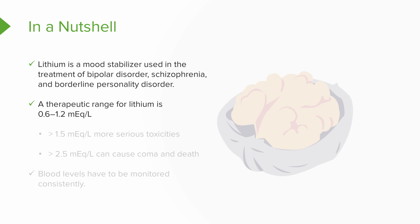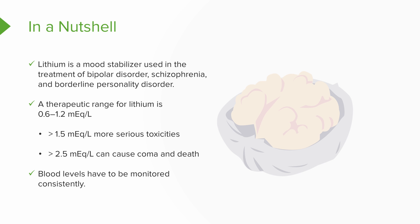An example of a therapeutic range for lithium is 0.6 to 1.2. Greater than 1.5 you're going to start to see some more serious toxicities, and greater than 2.5 can cause coma and death. The blood levels have to be monitored consistently. Early on in the treatment, they're monitored every two to three days, then you can go to every three to six months.